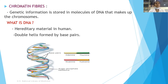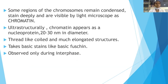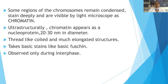Chromatin fibers carry genetic information. The genetic information is stored in molecules of DNA that make up the chromosome. DNA is the hereditary material in humans — a double helix formed by base pairs: adenine, thymine, guanine, and cytosine. Some regions of the chromosomes remain condensed, stain deeply, and are visible by light microscope as chromatin. Ultrastructurally, chromatin appears as a nucleofilament of protein 20 to 30 nm in diameter, with thread-like, coiled, and much-elongated structures.